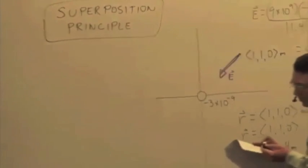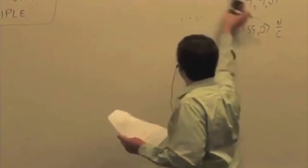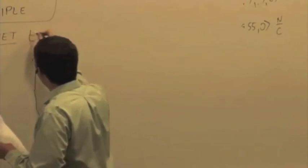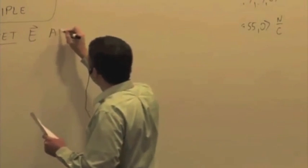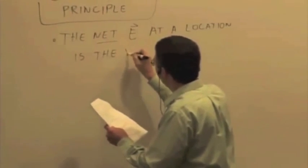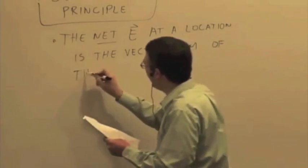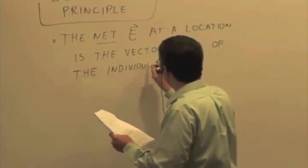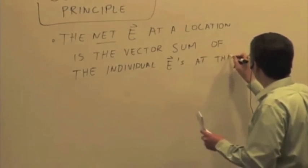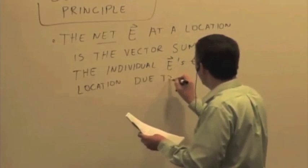Which says two things. First is that the net electric field vector at a location is the vector sum of the individual electric fields at that location due to each charged particle.